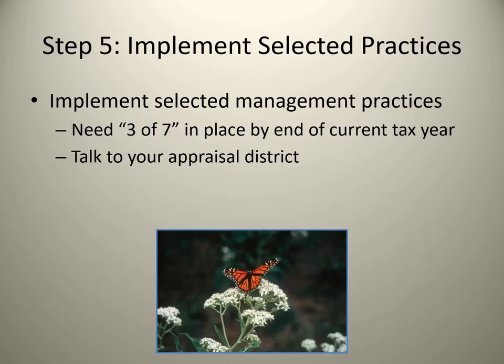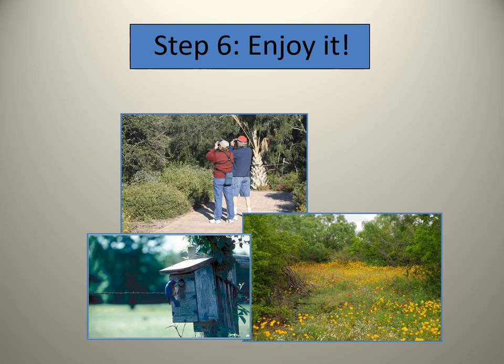The last step is to implement your management practices as described in your plan. Remember, you need to complete at least three out of seven categories by December 31st of that year. We typically recommend including four or five practices in your plan so that you have a backup in case you are not able to complete one of your practices. And of course, enjoy your property — remember, a requirement of the wildlife tax valuation is that the property must be used for human use, including recreation.